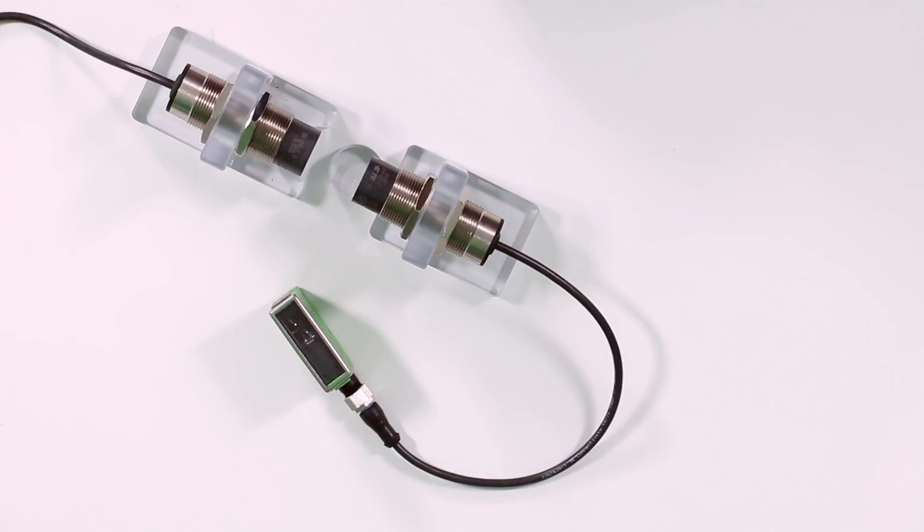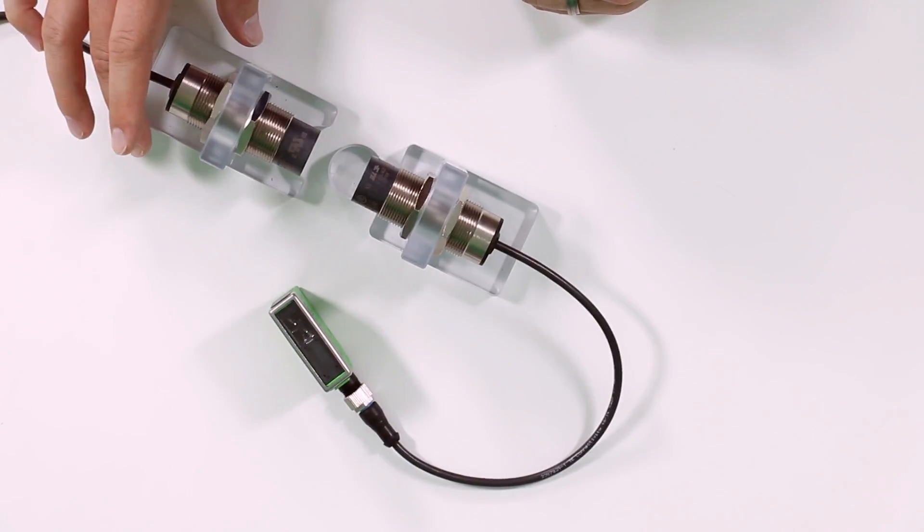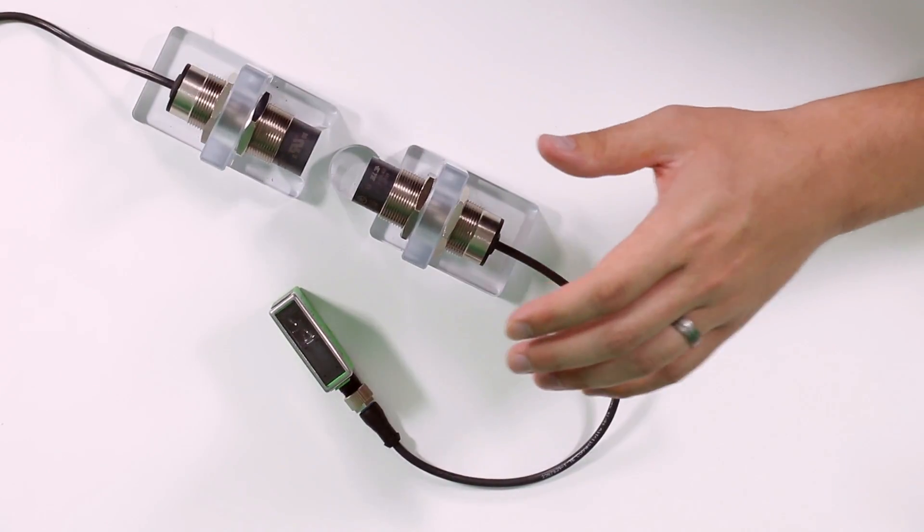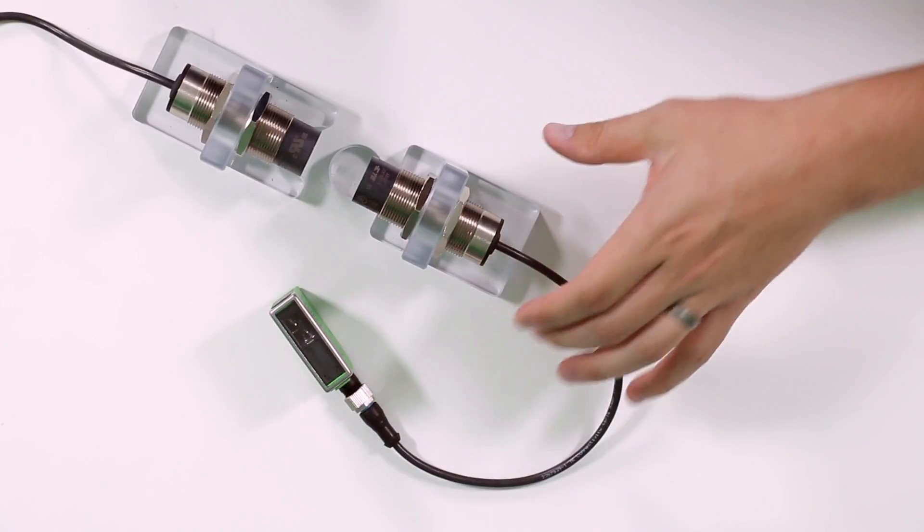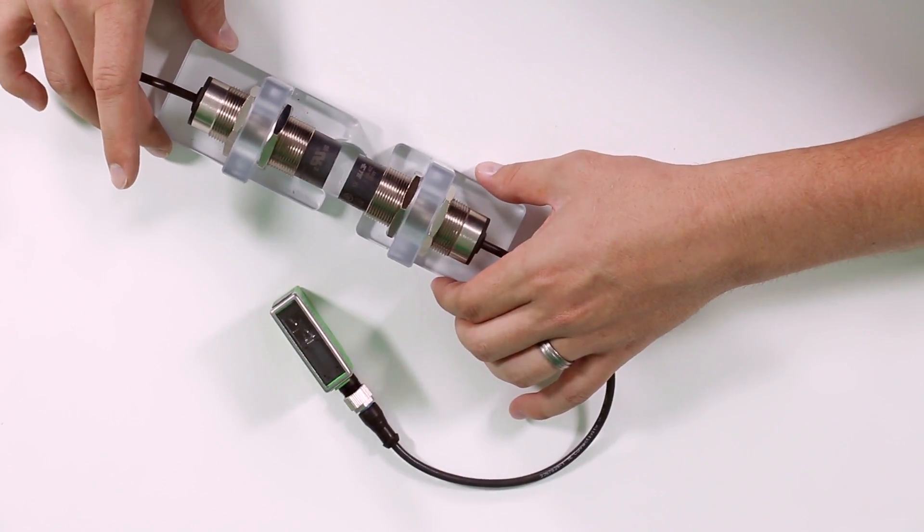In this setup, I have the transmitter which is going to transmit the power to the receive side and turn on the light. As I close this gap down to that 7mm window, you can see that happen.